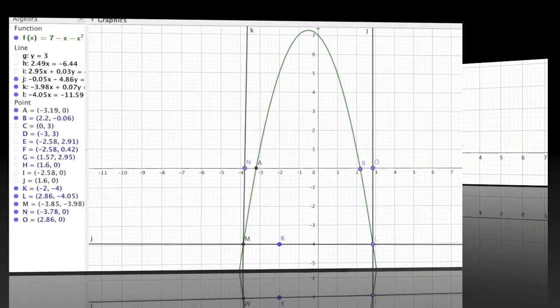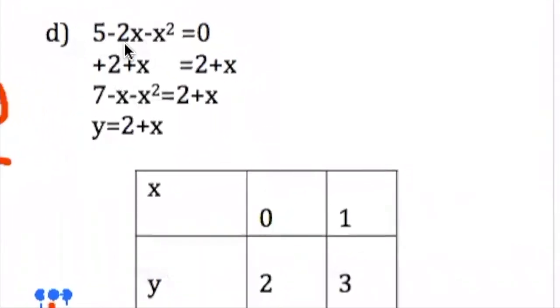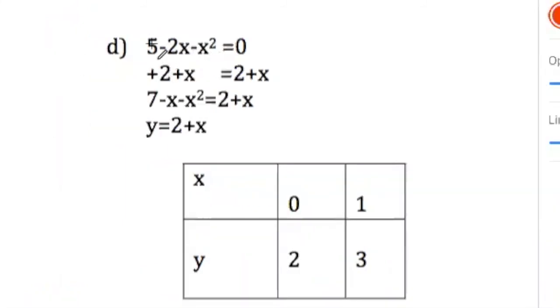Now, the final activity for number 3 is where we have 5 minus 2x minus x square. It is not looking like the original. We need to have a 7 here. We need to have a minus x. I need this 5 to become a 7. So, that is why I have plus 2 here.